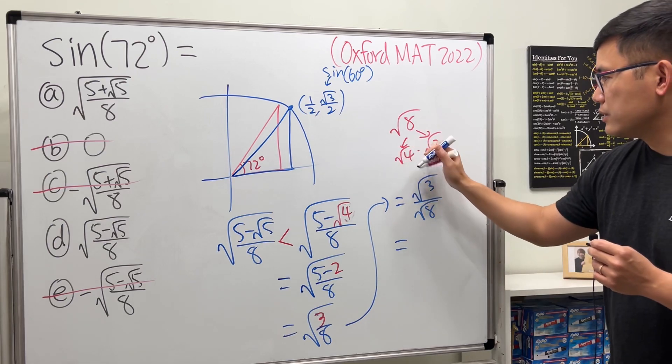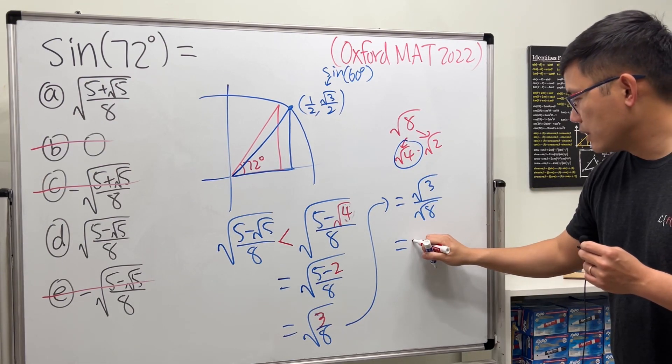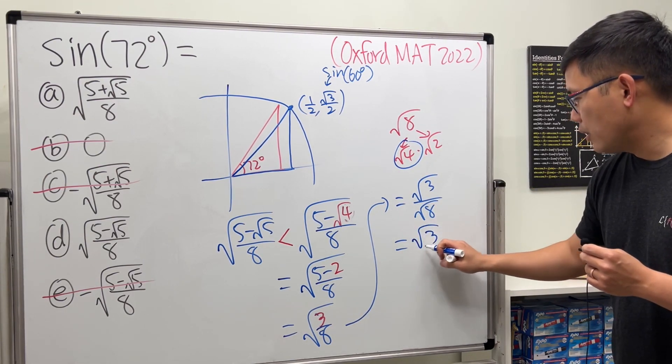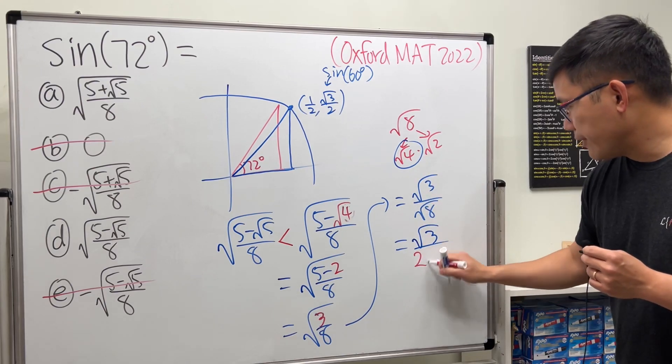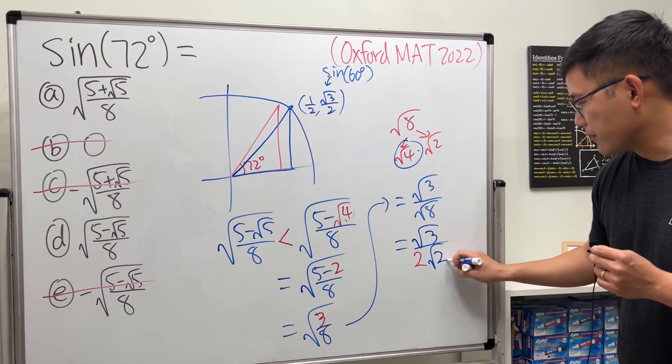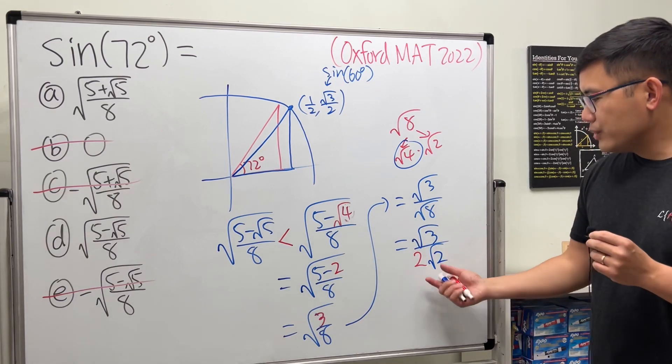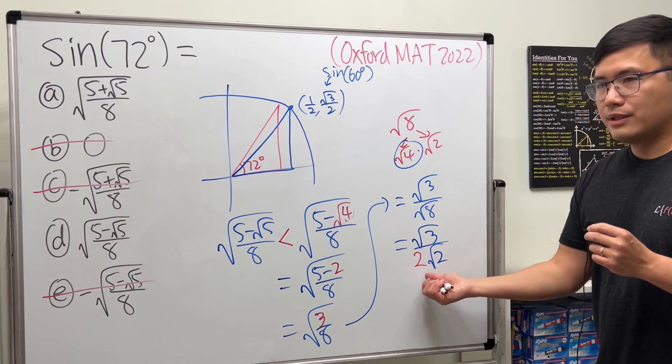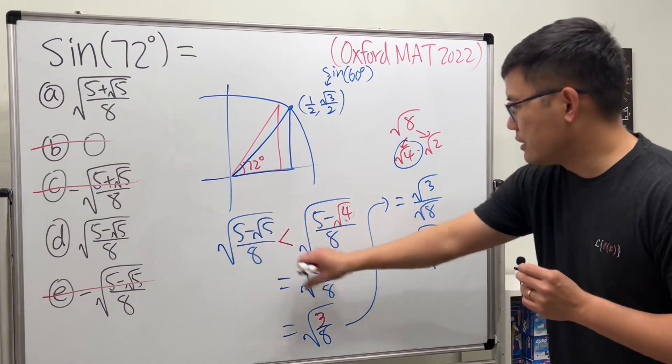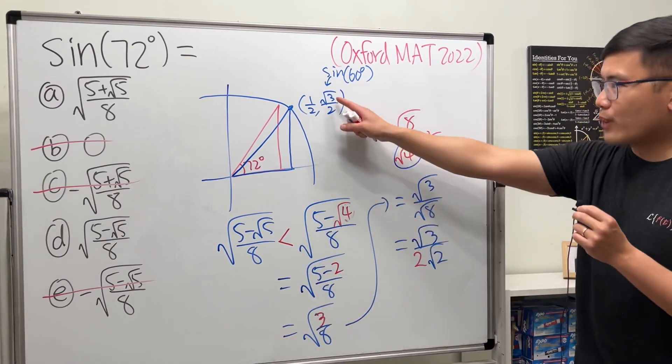√8 is the same as 4 times 2, right? So it's √4 times √2. This right here is just a regular 2, so we have √3 over this regular 2, and then this is the √2. Now I want to get rid of one of these so I can show that this is smaller than √3/2.